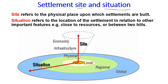Let's look at site and situation of a settlement. A site refers to the physical place upon which a settlement is built — the physical location, the point at which the settlement is found itself. Situation refers to the location of the settlement in relation to other important features, for example if the settlement is close to resources or between two hills.